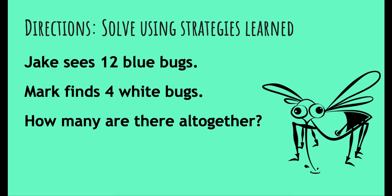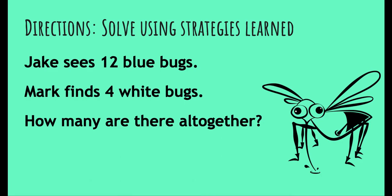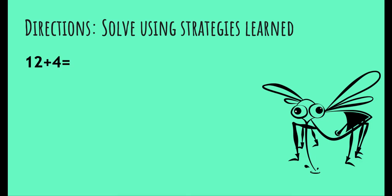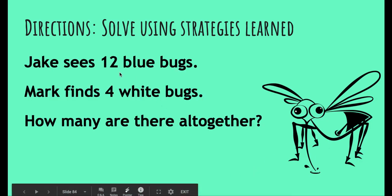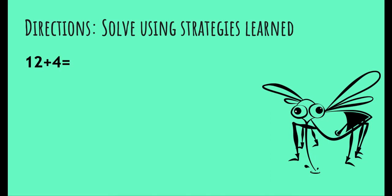Alright, let's see what this says. It says: Jake sees 12 blue bugs. Mark finds four white bugs. How many are there altogether? 'Altogether' is the key word that tells you that we need to add all of the bugs up. So you should have in your head 12 plus 4, because Jake saw 12 and Mark saw 4.